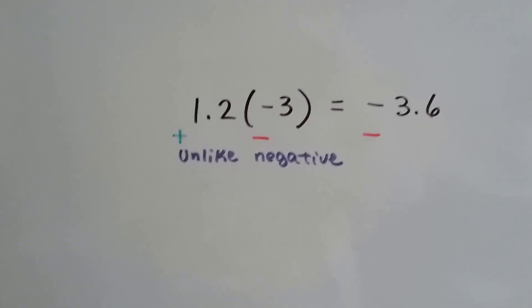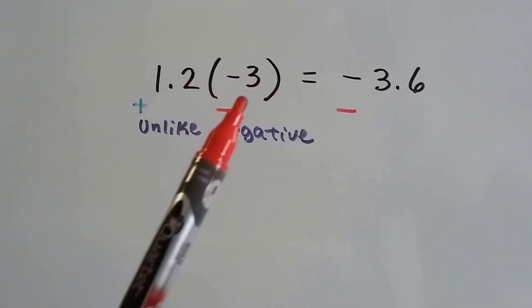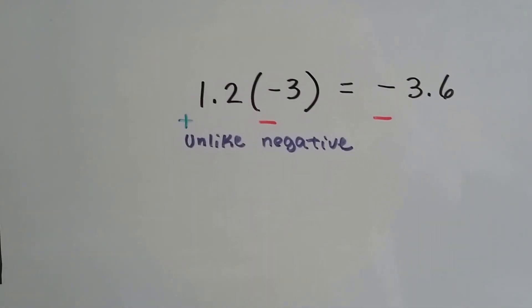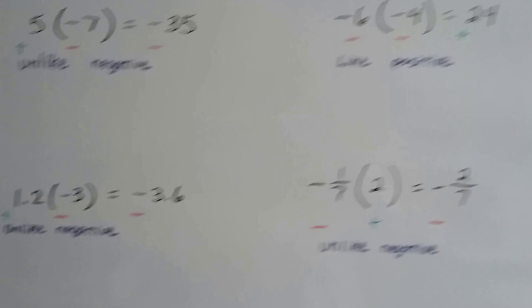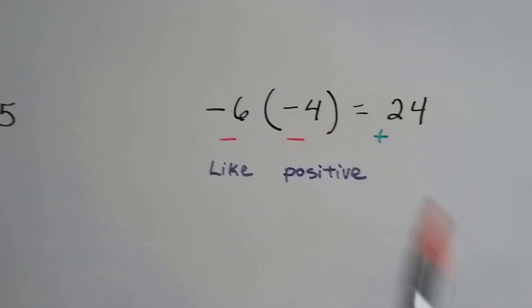We multiply the absolute values, 1.2 times 3 is 3.6. They have unlike signs, a positive and a negative, so our answer's a negative. Because they're unlike. When they're like, whether positive and positive or negative and negative, we're going to get a positive answer.